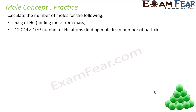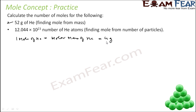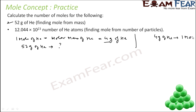We have to find the number of moles of 52 grams of helium. One mole of helium is equal to its molar mass, which is 4 grams. So 4 grams is 1 mole. 52 grams of helium will be 1 divided by 4 into 52 moles. Solving this, you get 13.